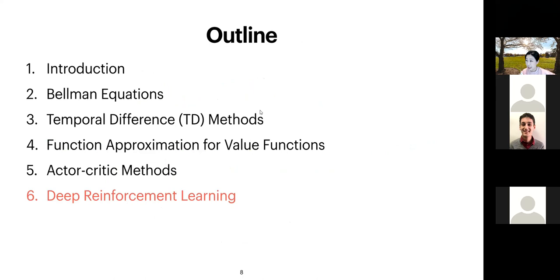Actor-critic is really a combination of value-based and policy-based methods, using both simultaneously. Now, as promised, we're finally at deep reinforcement learning.